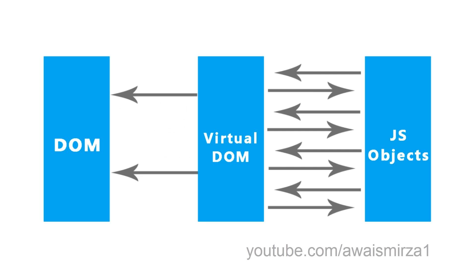Let's see a virtual representation of this. In native JavaScript code, we actually get and select elements from the actual DOM and update it whenever required. But in React, it uses a virtual DOM — it creates a copy of the actual DOM into a virtual DOM. Whenever we need to update an element, we don't select it from the actual DOM; instead, we get it from the virtual DOM as a JavaScript object, detect what has changed, and only those changed elements are replaced in the actual DOM.